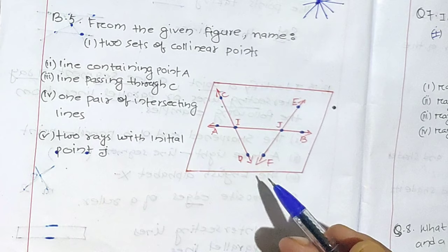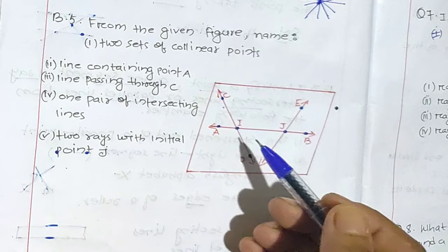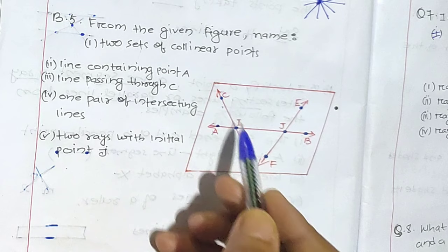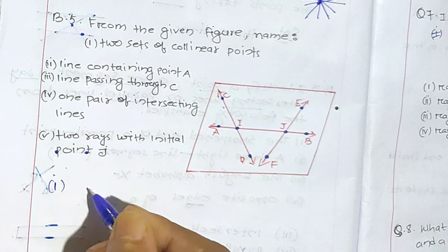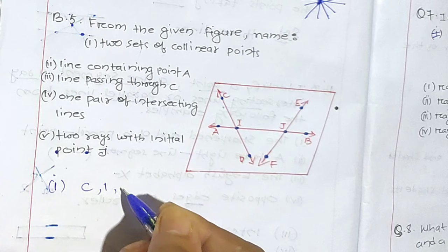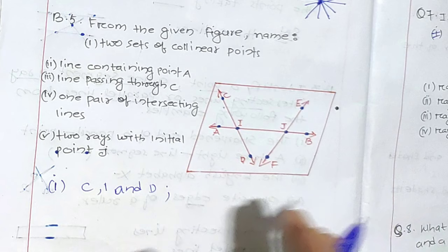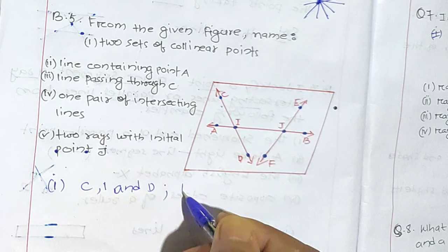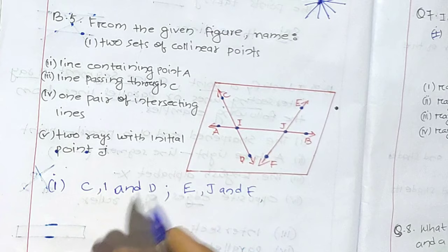So two sets of collinear points: the first set will be C, I, and D. So C, I, D is the first set. The next set will be A, E, J, F — so E, J, F. These are the two sets of collinear points.